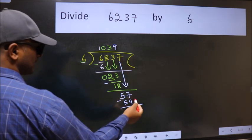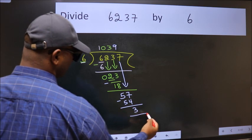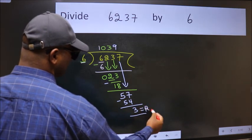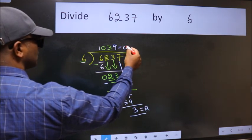No more numbers to bring down. So we stop here. This is our remainder and this is our quotient.